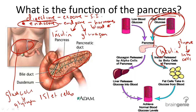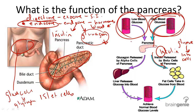The opposite occurs when blood glucose levels are really low. Glucagon is released, and its purpose is exactly counter to insulin's role in the body. Glucagon raises blood glucose levels by stimulating the liver and the muscles to convert glycogen back into glucose for release into the blood.